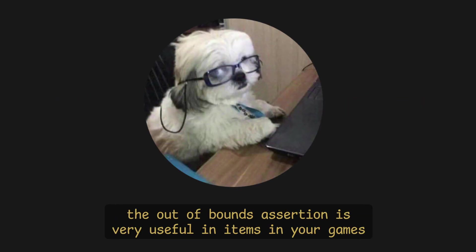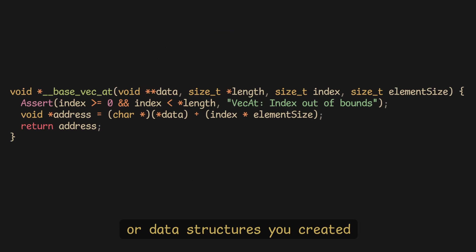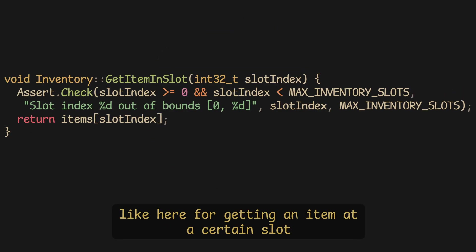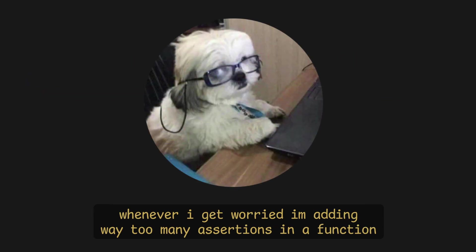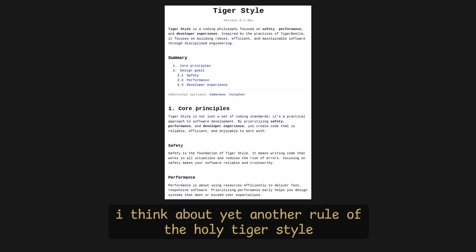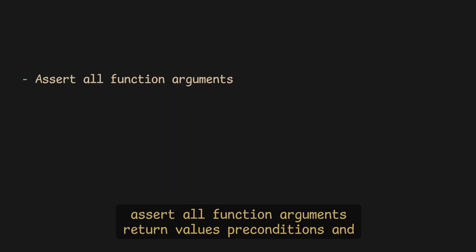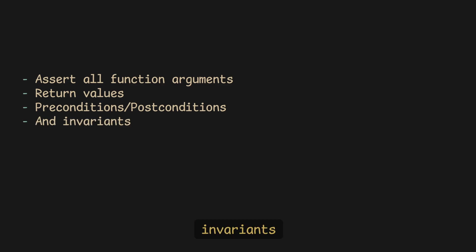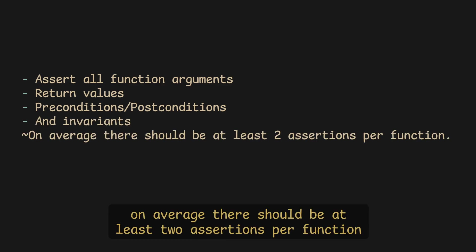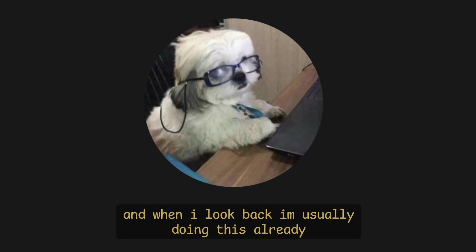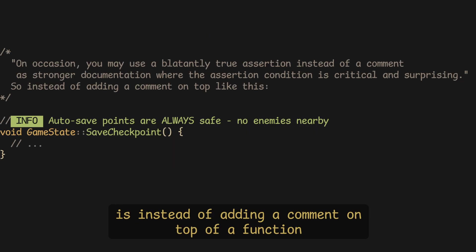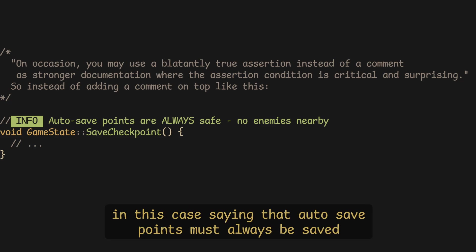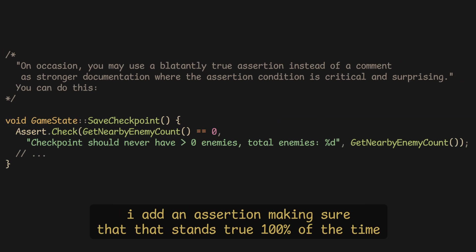The out-of-bounds assertion is very useful for inventories or data structures you created — like here, fetching an item at a certain slot and checking that the index is within the bounds. Whenever I get worried I'm adding too many assertions in a function, I think about another rule of Tiger Style: assert all function arguments, return values, preconditions, and invariants — on average, at least two assertions per function. Another Tiger Style rule I like: instead of adding a comment on top of a function saying autosave points must always be safe, I add an assertion making sure that stands true 100% of the time.